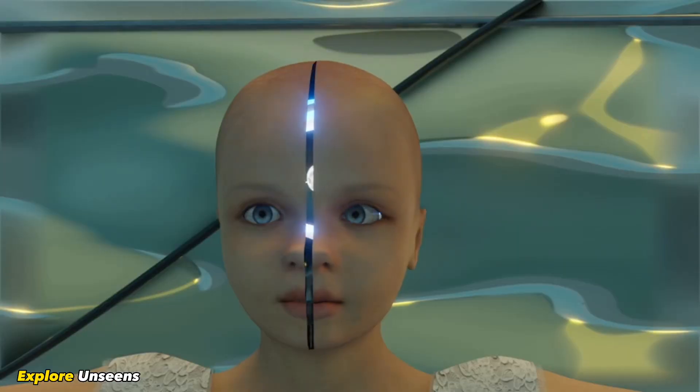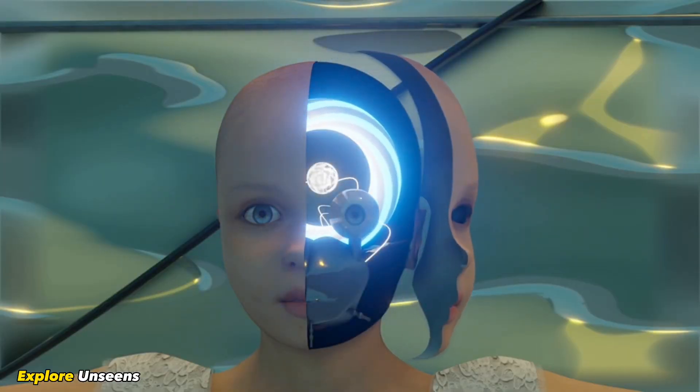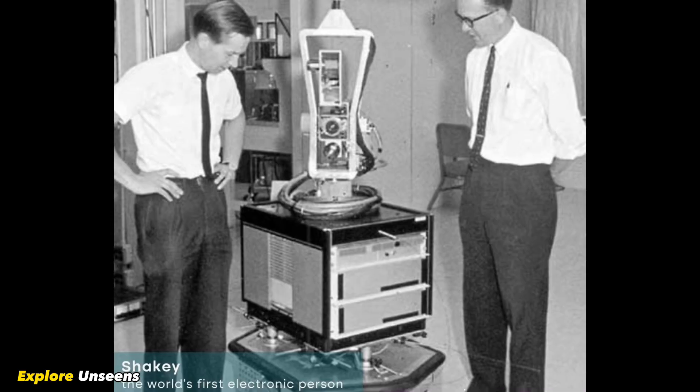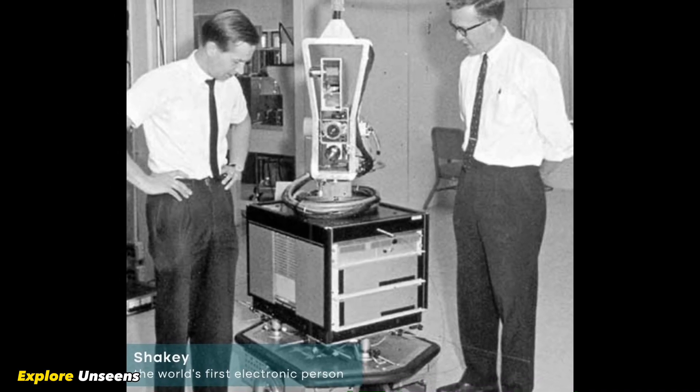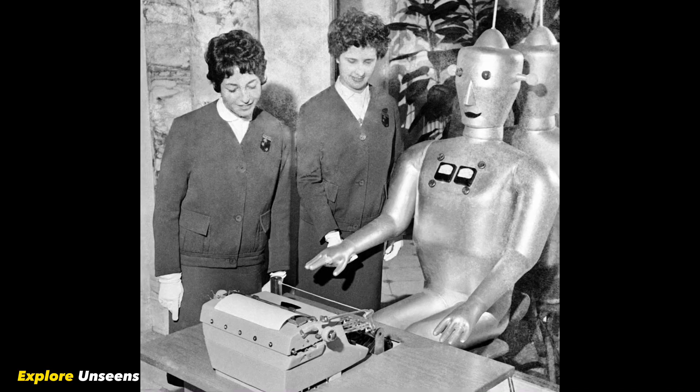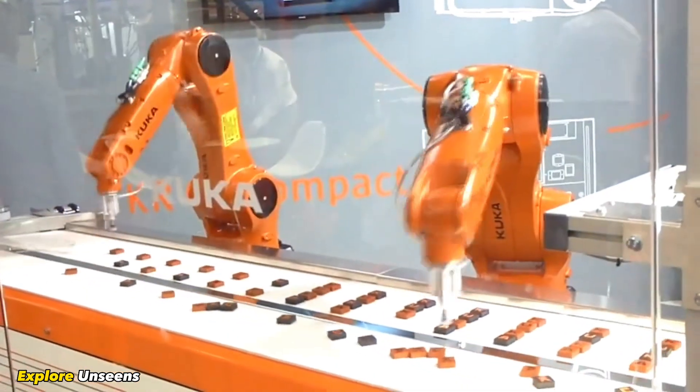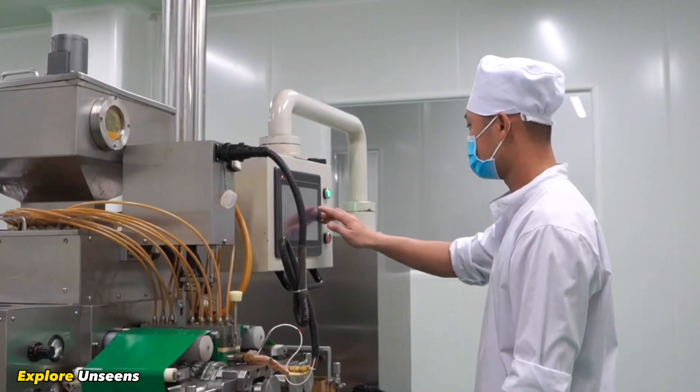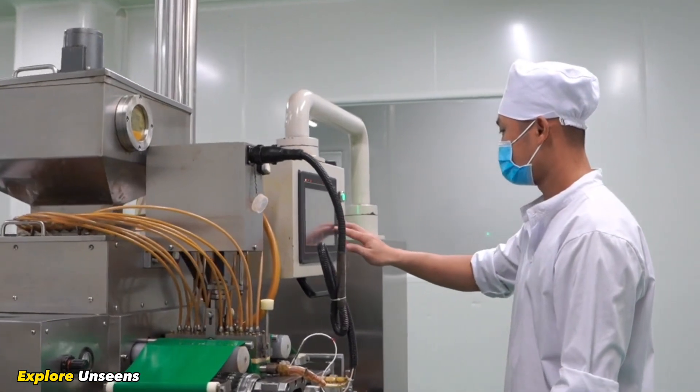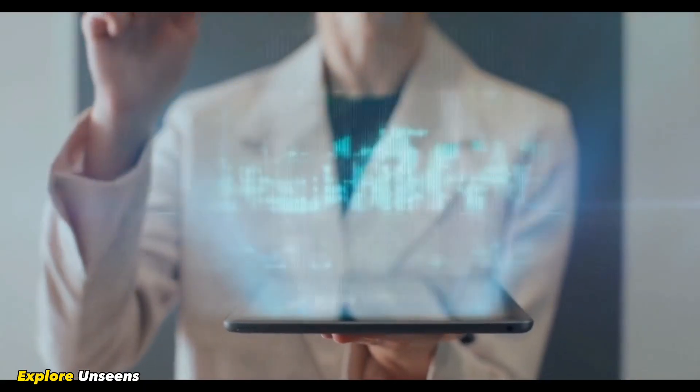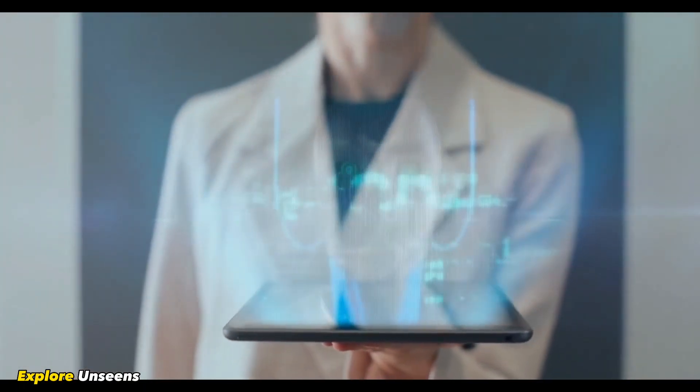To understand where AI is heading, let's take a quick look at its past. AI has come a long way since its inception, evolving from simple rule-based systems to the complex machine learning algorithms we have today. With advancements in computing power and data availability, AI has become more capable and impressive than ever before.